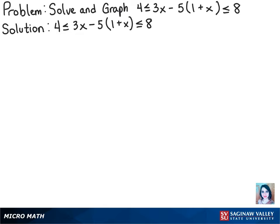So the first thing we can do is distribute the 5 to both terms in the parentheses. Doing so will give us 4 is less than or equal to 3x minus 5 minus 5x is less than or equal to 8.